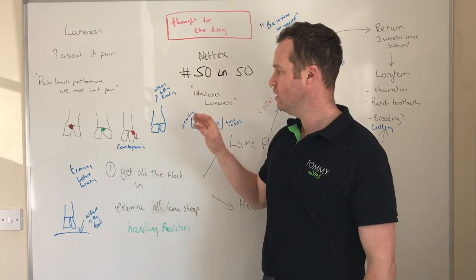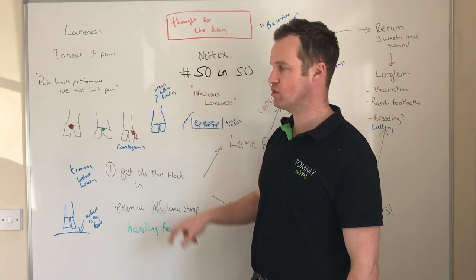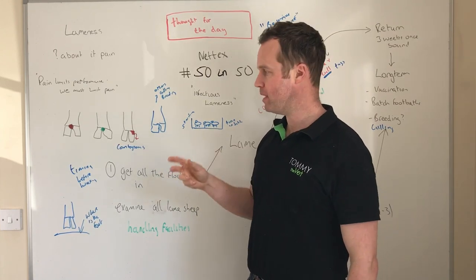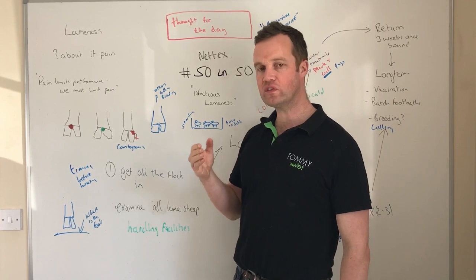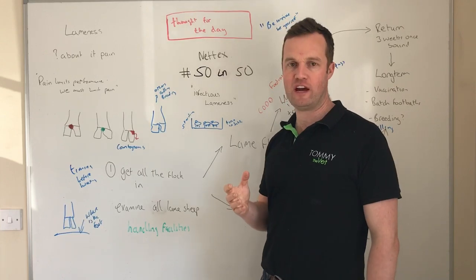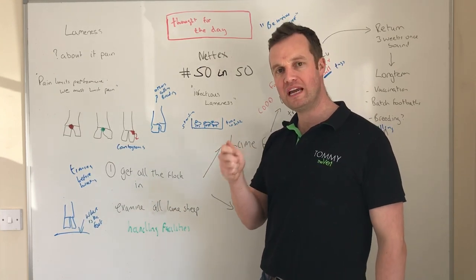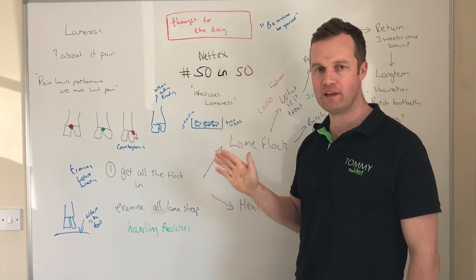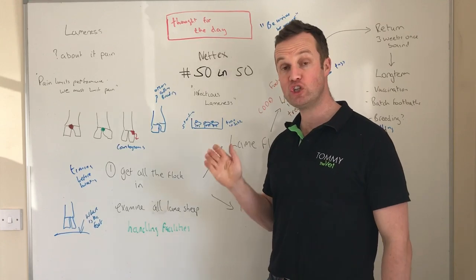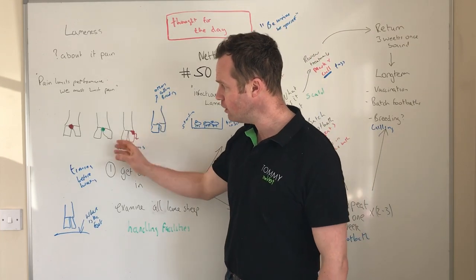Key decisions when pulling out lame sheep include breeding and culling decisions. People often talk about paring hooves, but since I started as a vet the idea of paring feet has really gone out of fashion — and rightly so, because these conditions are contagious and spread within the flock. Foot paring is one real agent of spread. If you do pare feet, use an alcohol disinfectant to dip shears between every foot or every sheep, and avoid paring if at all possible.